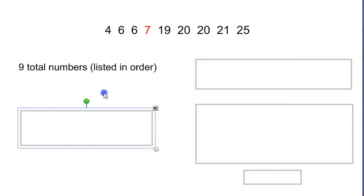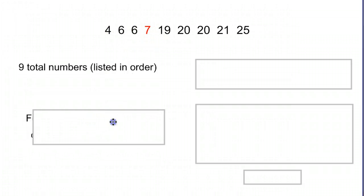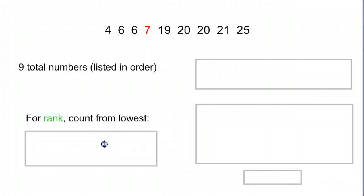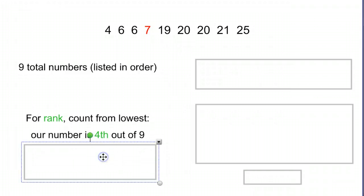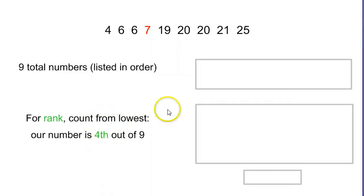For a simple rank, we can see that we have one, two, three values that are smaller than the seven. And then the seven is the fourth from the bottom. So counting from lowest up, we are fourth out of nine. So the rank would be fourth.